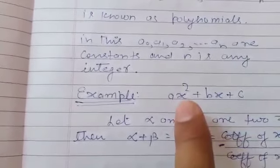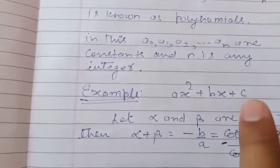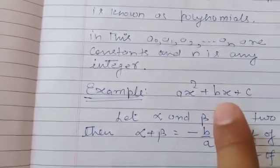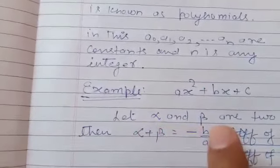In this, the coefficient of x² is a, coefficient of x is b, and c is the constant term. Let us assume that the zeros of this polynomial are alpha and beta.